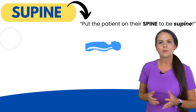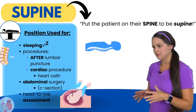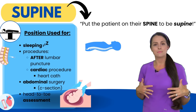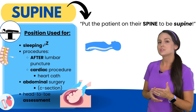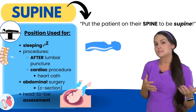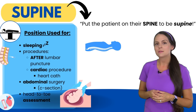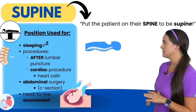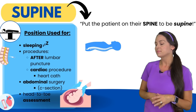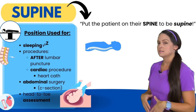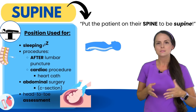The supine position is a very popular position for sleeping. It's also used after procedures — for instance, after a lumbar puncture, it may help decrease the headache you can get after that procedure. It can be used after heart procedures like a heart cath, where you keep the patient flat for several hours. It's also used for abdominal surgery such as a C-section, and it's really helpful for head-to-toe assessments, especially when assessing the anterior part of the body.